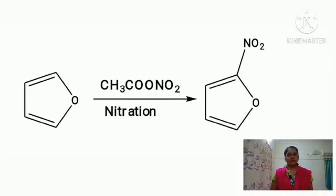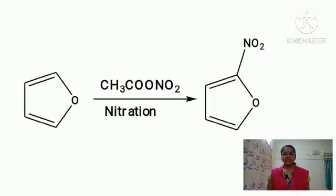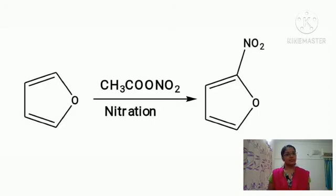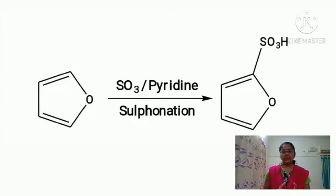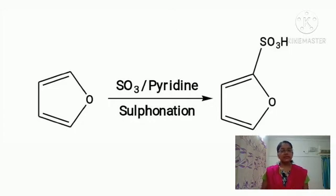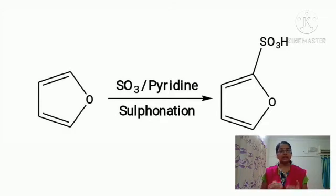Next is the nitration of furan: when furan reacts with acetyl nitrate, we get 2-nitrofuran as the product. Next is the sulfonation of furan: when furan undergoes treatment with sulfur trioxide in the presence of pyridine as solvent, we get furan-2-sulfonic acid — the second position of furan is attacked by the sulfonic acid group.